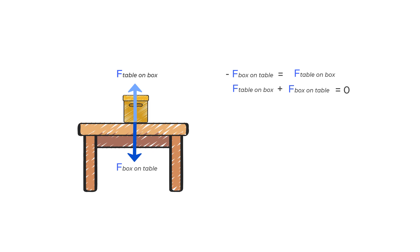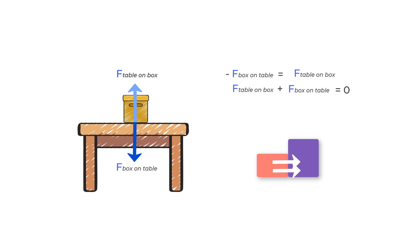That is the reason the box is stationary. Another very important thing to notice from these two examples is that the pair of forces never act on the same body. When there are two interacting bodies, one force acts on one body and the other force acts on the interacting body. You can never have both forces acting on the same body — if they are, you cannot call them action-reaction pairs.